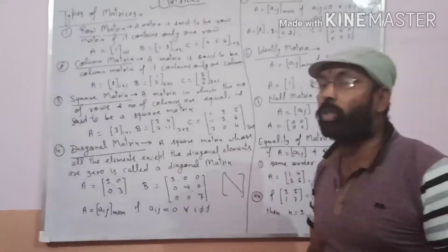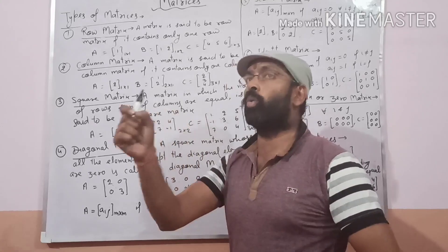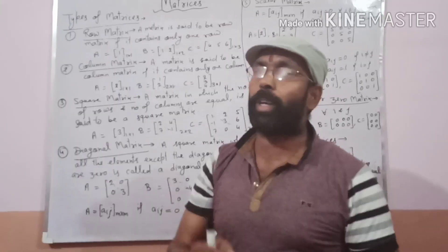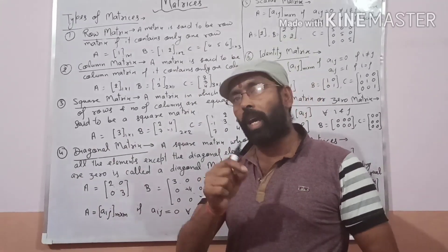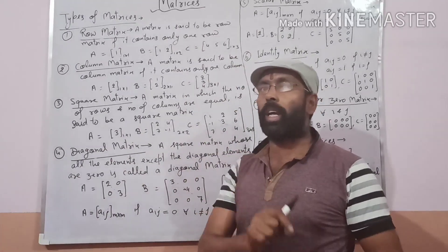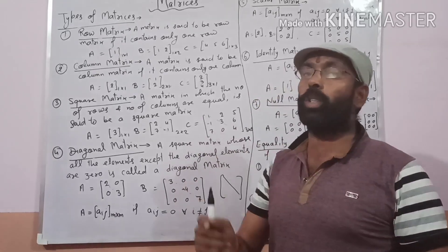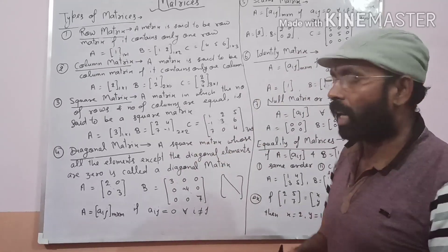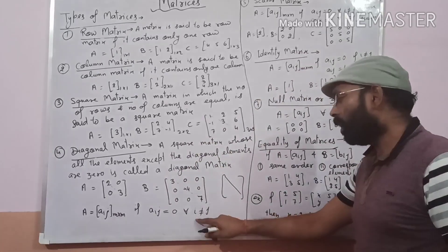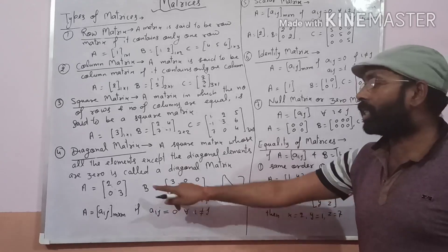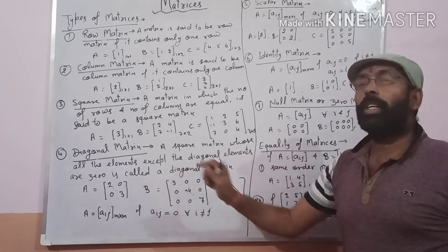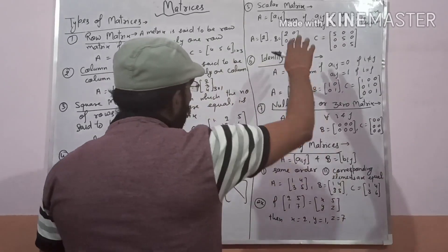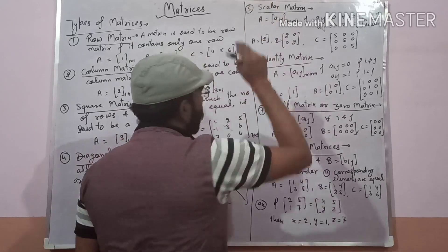For example, A11, A22, A33 are the diagonal elements, while A12, A21, A31, A13, A23 are all the non-diagonal elements. This is called the diagonal matrix.